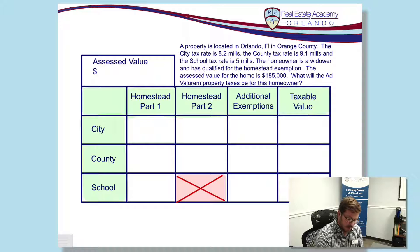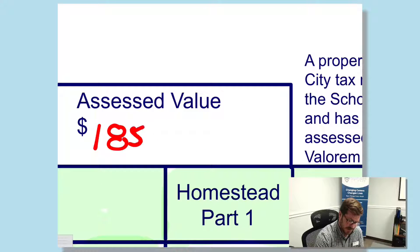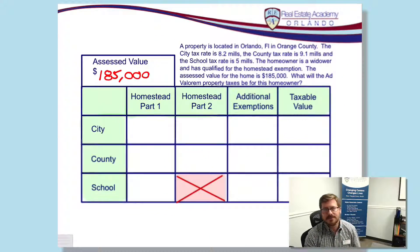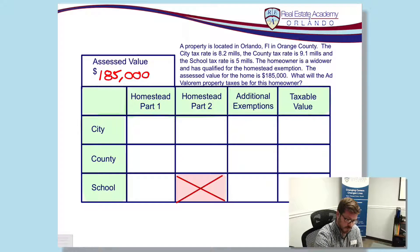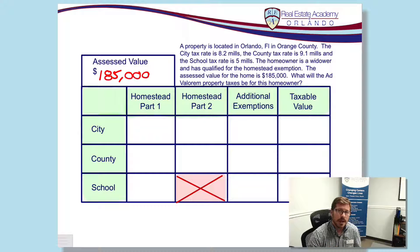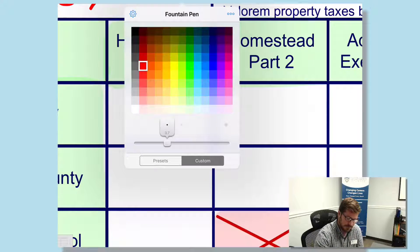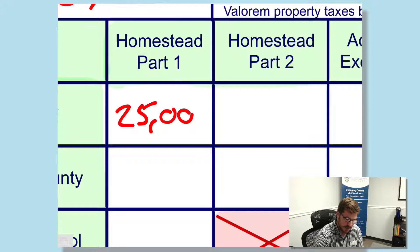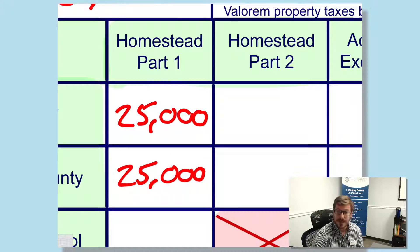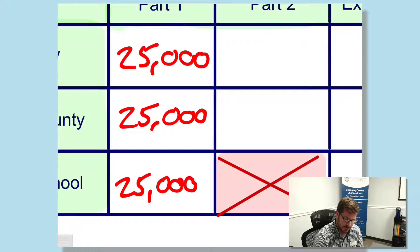We begin with our assessed value of $185,000. When breaking down the taxes, we always want to get down to our taxable value — that's what we'll use to calculate taxes with the millage rate. The first thing is the homestead exemption. There's Part 1 and Part 2. Everyone gets Part 1 as long as their property is valued over $50,000, and the Part 1 exemption is $25,000. So that's $25,000 for city, $25,000 for the county, and $25,000 for the school district.